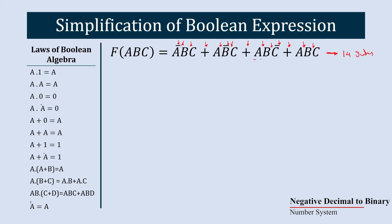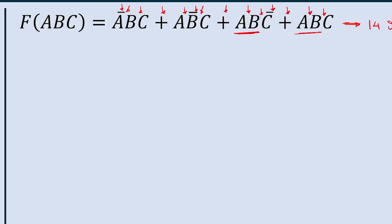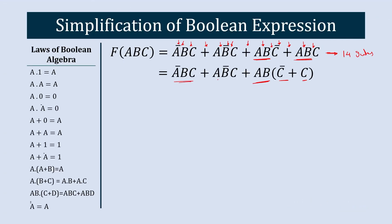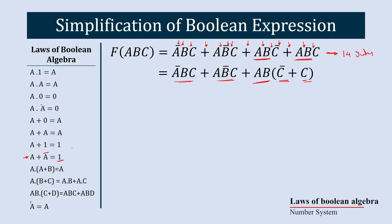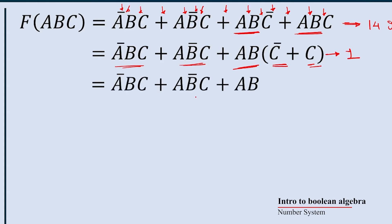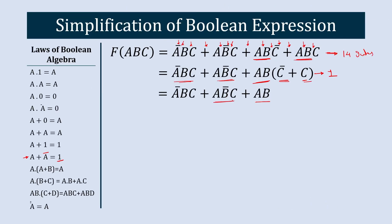Here, AB is common in the last two terms. If we factor out AB, we get: AB · (C̄ + C), with the first two terms staying as they are. Now C̄ + C is similar to A + Ā, and A + Ā = 1, so we replace C̄ + C with 1. This gives us: ĀBC + AB̄C + AB.